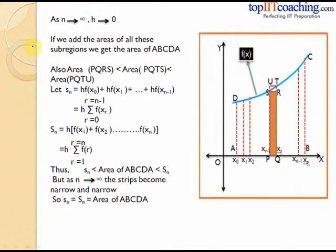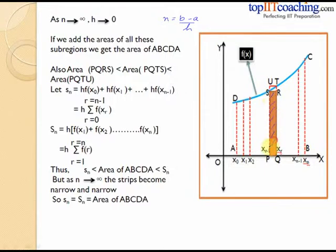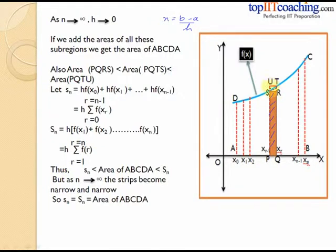When n tends to infinity, h tends to zero, since n equals (b minus a) divided by h. If we add the areas of all the sub-regions, we get the area of ABCD. Consider the area of rectangle PQRS — this brown portion is less than the area under the curve between P and Q, which in turn is less than the rectangle PQTU. So we obtain the inequality: area of PQRS is less than the area under the curve between P and Q, which is less than area of PQTU.